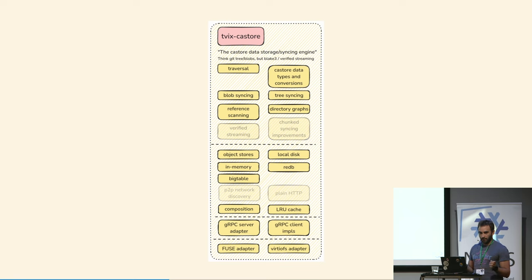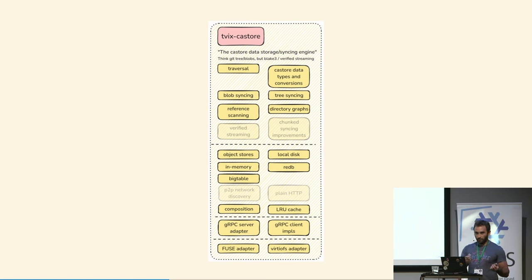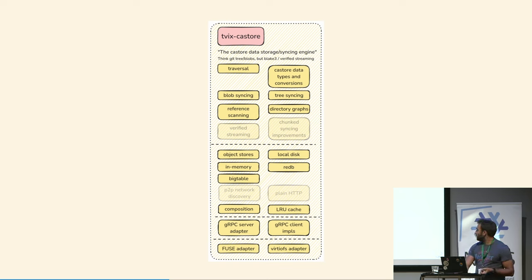This speeds up substitution and copying things back and forth between builders. Because everything is content-addressed — similar to how Git internally has its model — it's like a Merkle structure. Tvix works similarly, except it uses a different hash function that allows you to be more granular and more sparse in what you fetch while still keeping the content-addressed properties. Because everything is CA this way, you can decentralize the whole substitution — enabling local peer-to-peer substitution. If you have a bunch of servers running in a rack all building similar things, they don't need to fetch from the binary cache. They can just ask each other, and you don't have to trust them because it's all content-addressed — if they send you crap, you immediately see it. Some hash functions also allow you to verify content as you fetch, so you don't have to download the entire 2-gigabyte ISO before realizing something is off. That's the verified streaming part.